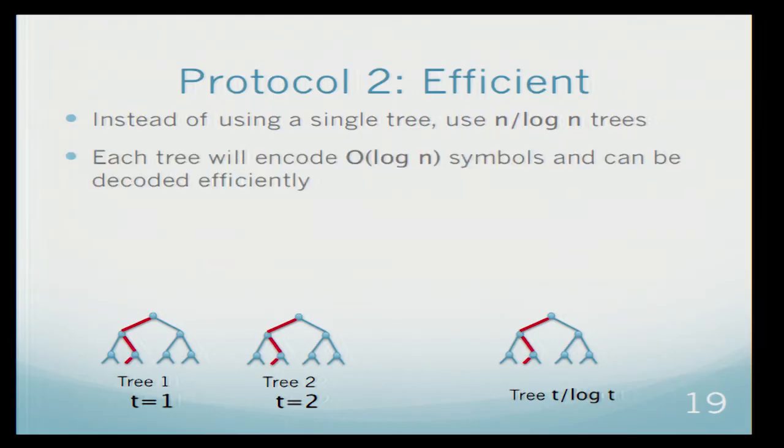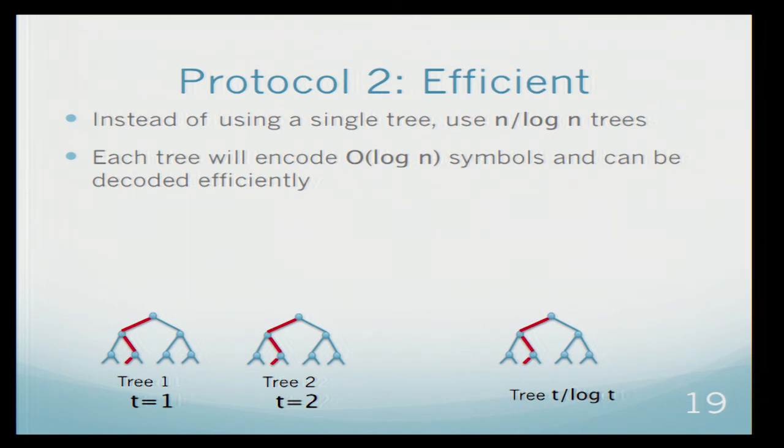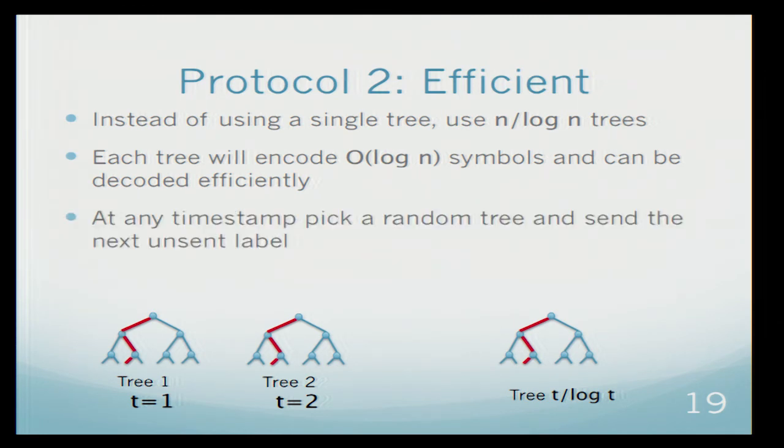But we can use these ideas to come up with an efficient scheme. The idea here is, instead of using one very deep tree, we will use plenty of very shallow trees. So we will use a lot of trees, and each one of them will be used to encode only log n bits, so decoding them can be done in polynomial time. There is some cleverness in how do we pick at each time the right tree, and how do we take the stream and split it into trees, but this is doable.